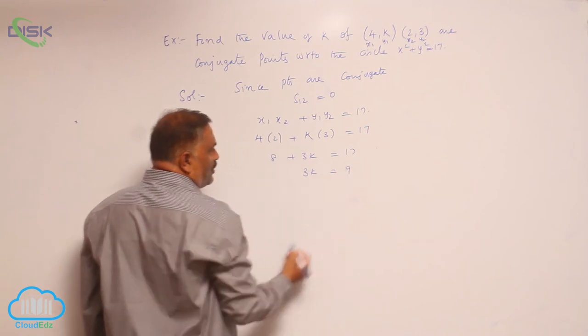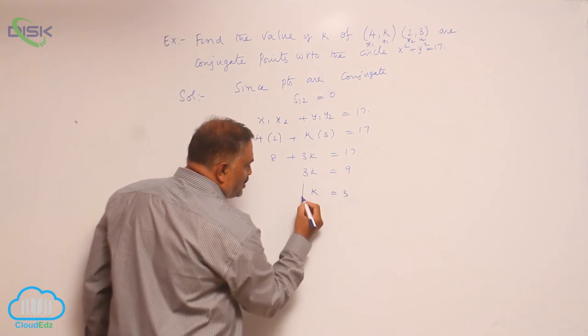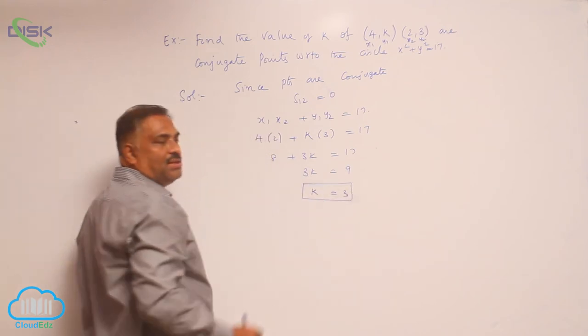3k equals 9 because 17 minus 8 is 9. k equals 3. So, the value of k is 3.